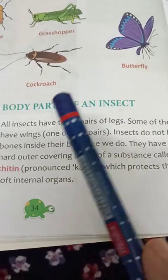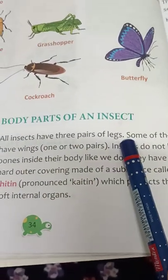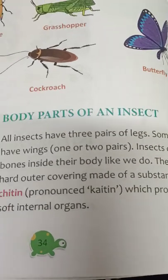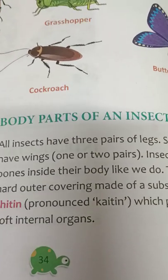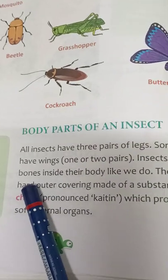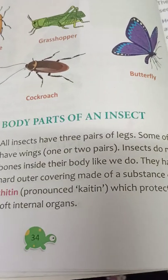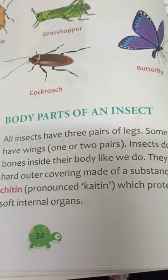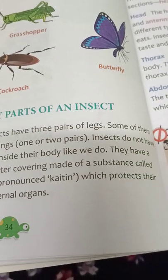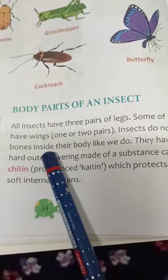All insects have three pairs of legs. Some of them have wings — one or two pairs. Some insects have two wings and some have four wings, depending on the type of insect. Insects do not have bones.